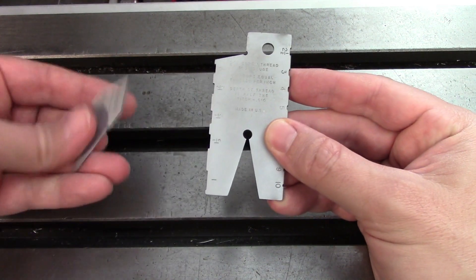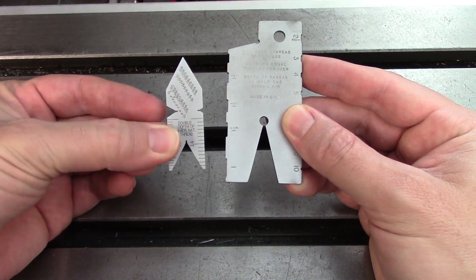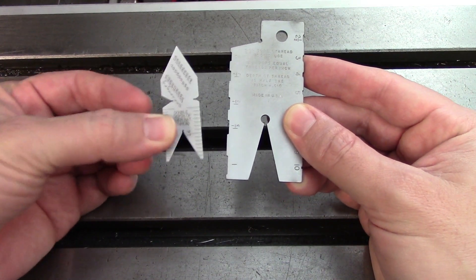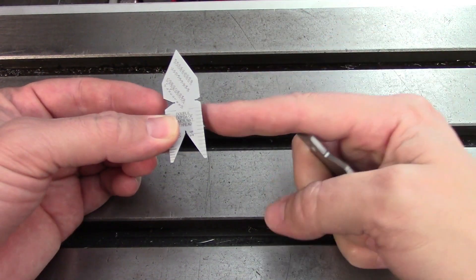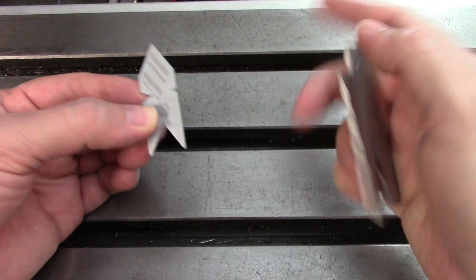It's used much in the same way as one of these which I'm sure most of you are pretty familiar with. This is a center gauge or a fishtail gauge and this is used to grind standard threading tools with a 60 degree profile.